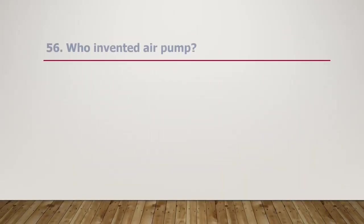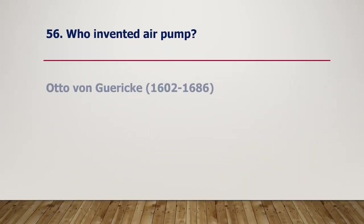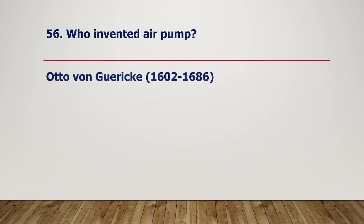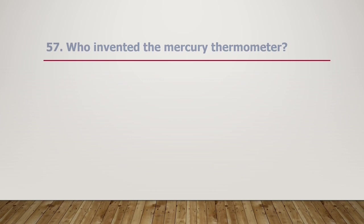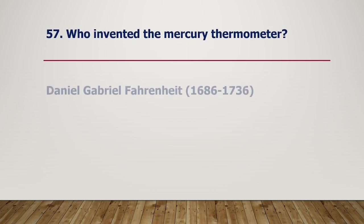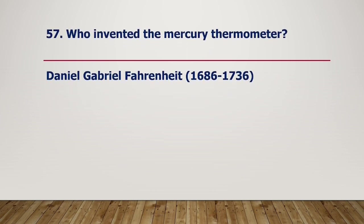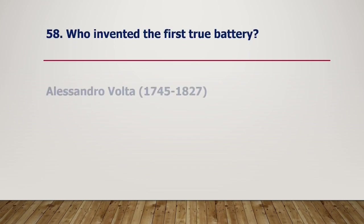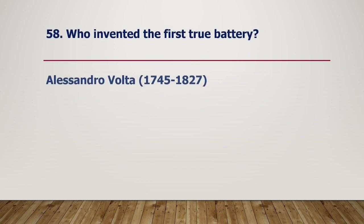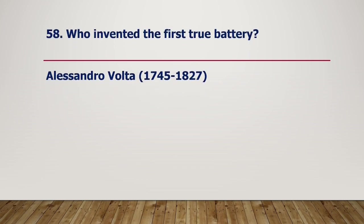Who invented the air pump? Otto von Guericke, 1602–1686. Who invented the mercury thermometer? Daniel Gabriel Fahrenheit, 1686–1736. Who invented the first true battery? Alessandro Volta, 1745–1827.